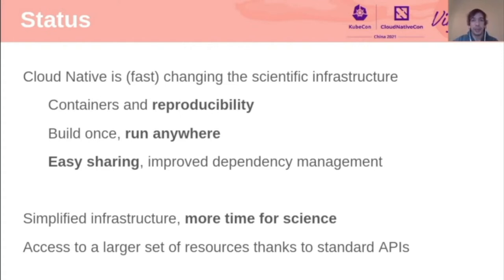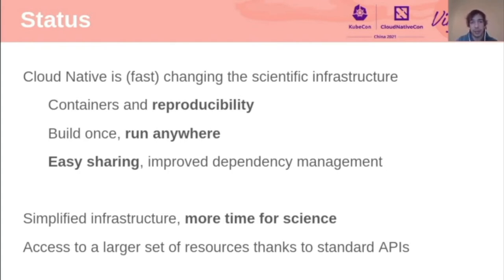And finally, once you have this single unit where you have wrapped your code and data, sharing these units with your colleagues is much easier. This is something that is really key to scientific collaboration — the fact that you can have your analysis and share it easily for your colleagues to reproduce. All of this together means that the infrastructure itself is very much simplified, and scientists can spend a lot more time doing actual science than maintaining the underlying infrastructure. One of the things also coming out of this is access to a much larger set of resources, thanks to these standardized APIs around the cloud native tools.